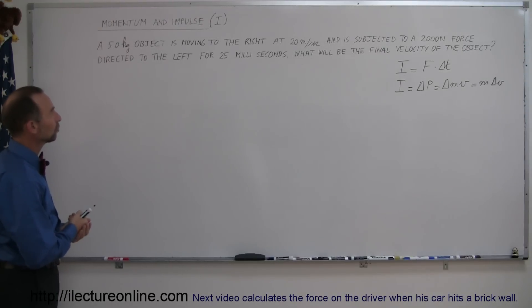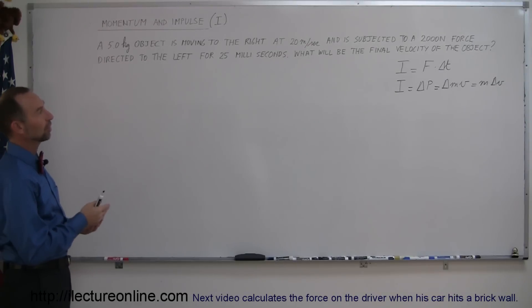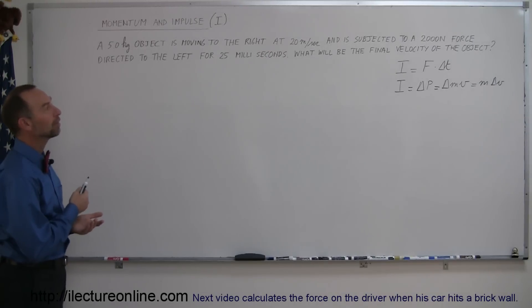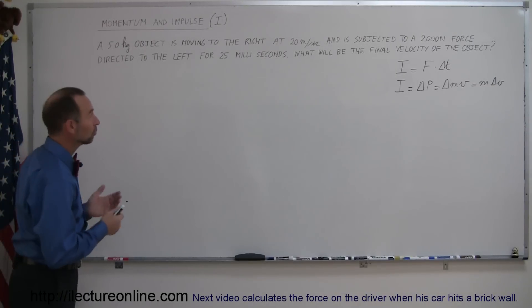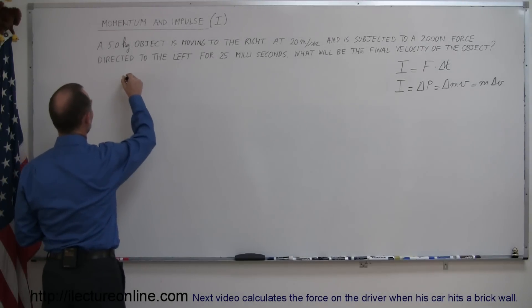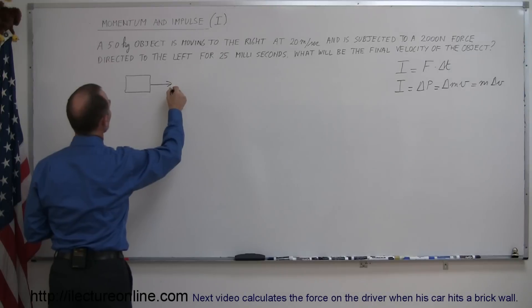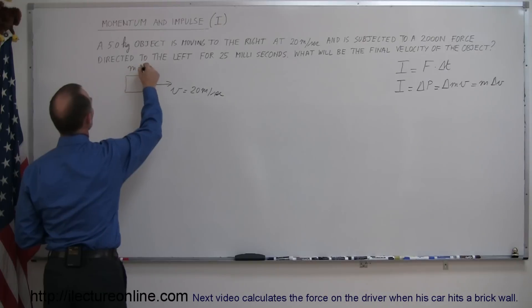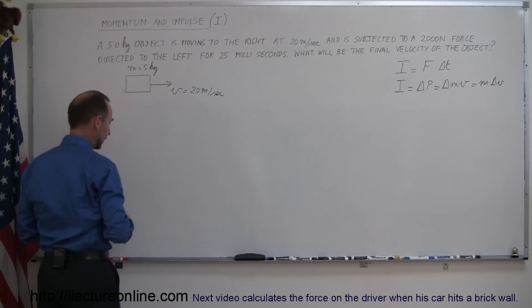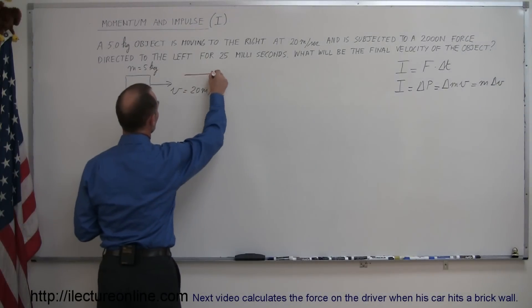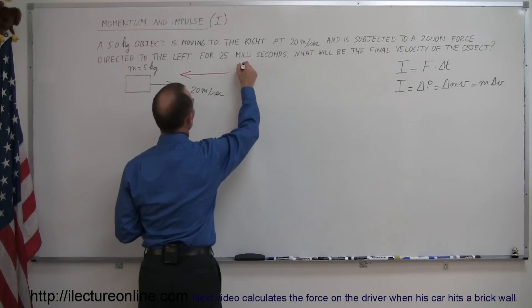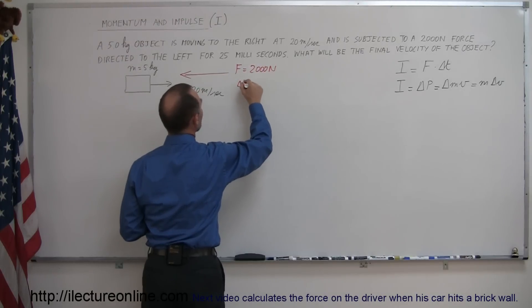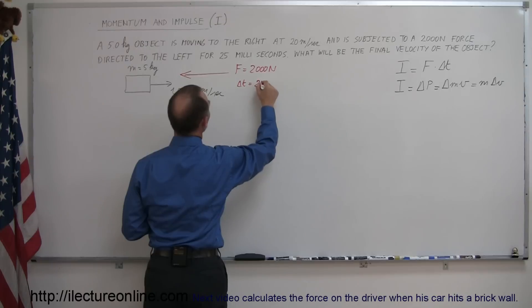We have a 5 kilogram object which is moving to the right at 20 meters per second, and it's subjected to a 2,000 newton force directed to the left for 25 milliseconds. What will be the final velocity of the object? Let's draw a little picture. Here we have an object moving to the right with velocity v equal to 20 meters per second and mass equal to 5 kilograms. Then it's subjected to a force acting to the left — force equal to 2,000 newtons — and the duration of the force, delta T, is equal to 25 milliseconds.